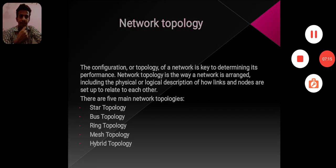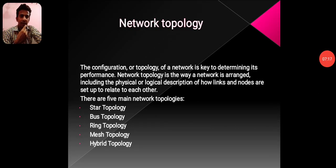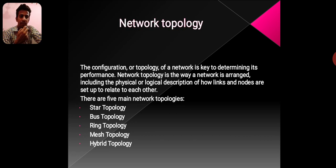Network Topology. The configuration or topology of a network is key to determining its performance. Network topology is the way a network is arranged, including the physical or logical description of how links and nodes are set up to relate to each other. There are five main network topologies: star topology, bus topology, ring topology, mesh topology, and hybrid topology.